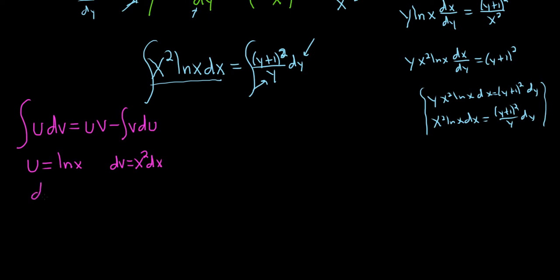Then your du is 1 over x dx. And then when you integrate dv, you get your v. So v is equal to x cubed over 3.